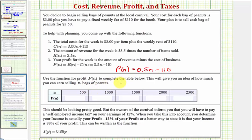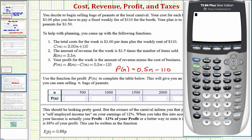We're asked to use the profit function P of N to complete the table below. This will give you an idea of how much you can earn selling N bags of peanuts. To save some time, we'll do this using the calculator. There are a couple ways to do this on the calculator, but we're going to use the home screen after we enter the profit function into Y1.